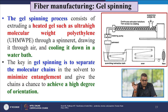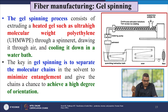The gel spinning process consists of extruding a heated gel, such as ultra-high molecular weight polyethylene, through a spinneret, drawing through air, and cooling it in a water bath. The key in gel spinning is to separate the molecular chains in the solvent to minimize entanglement and give the chains a chance to achieve a high degree of orientation.